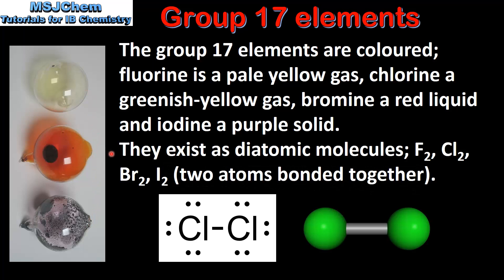They exist as diatomic molecules, for example F2, Cl2, Br2, and I2. Here we can see the Lewis structure of a Chlorine molecule, which is 2 Chlorine atoms bonded by a single covalent bond. And on the right we have a model of a Chlorine molecule.